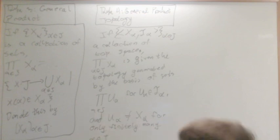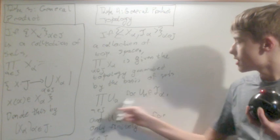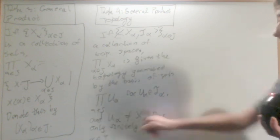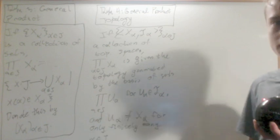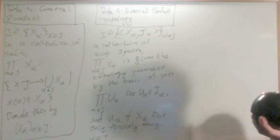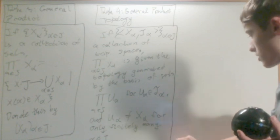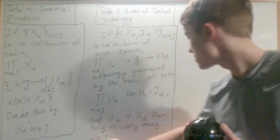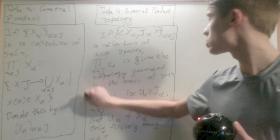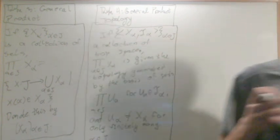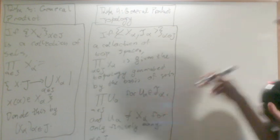U alpha is not equal to x alpha for only finitely many alpha an element of J. So that means that you only multiply finitely many u alphas together that aren't just the entire set. And so the reason why we reserve it to finitely many is because actually a lot of the structure is lost, and we'll see that further on.